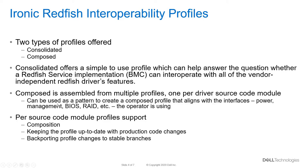The per-source-code-module profiles support a few things: composition, which we just discussed; keeping each individual profile up to date with production code changes — whether bug fixes or the addition of new feature function; and finally, it offers support for backporting profile changes to stable branches, mostly along the lines of bug fixes. You can easily follow the code changes and align them with the individual per-source-code-module profile.